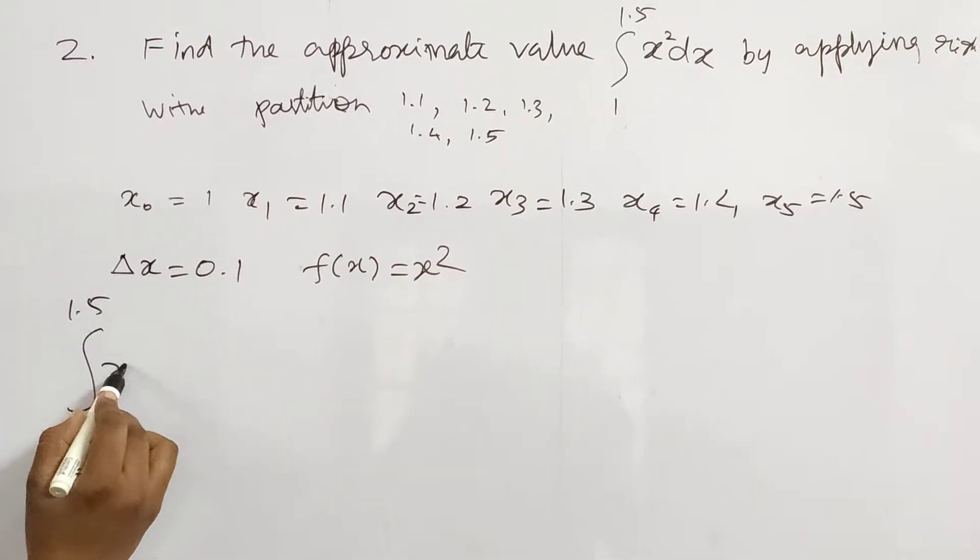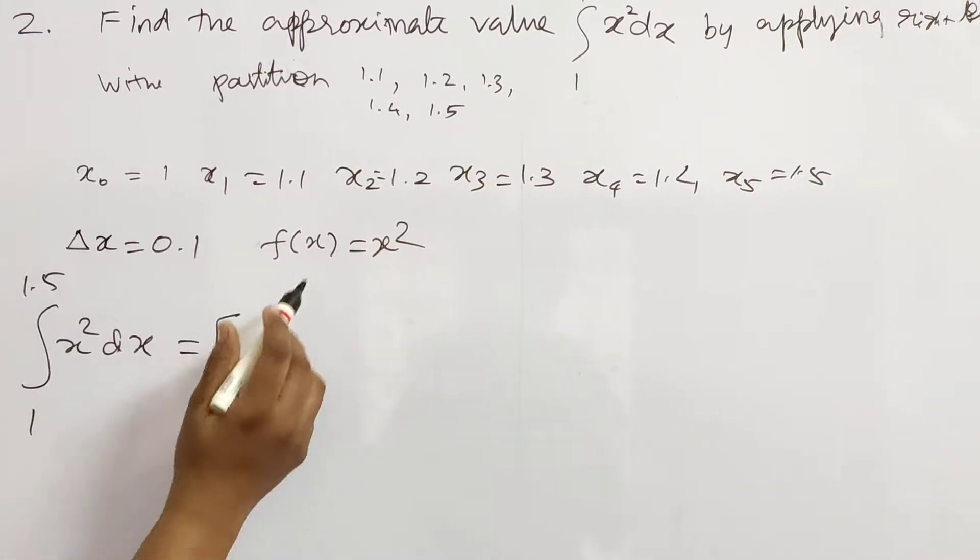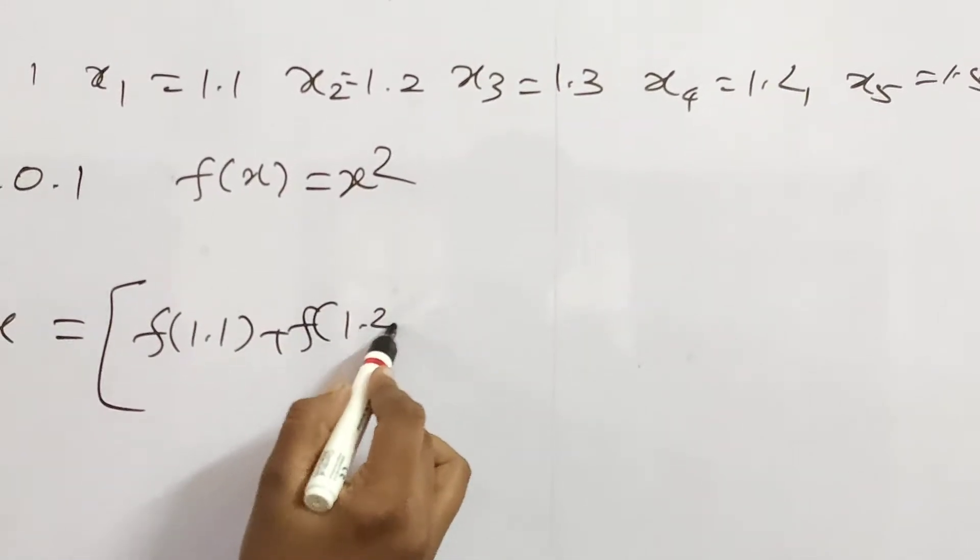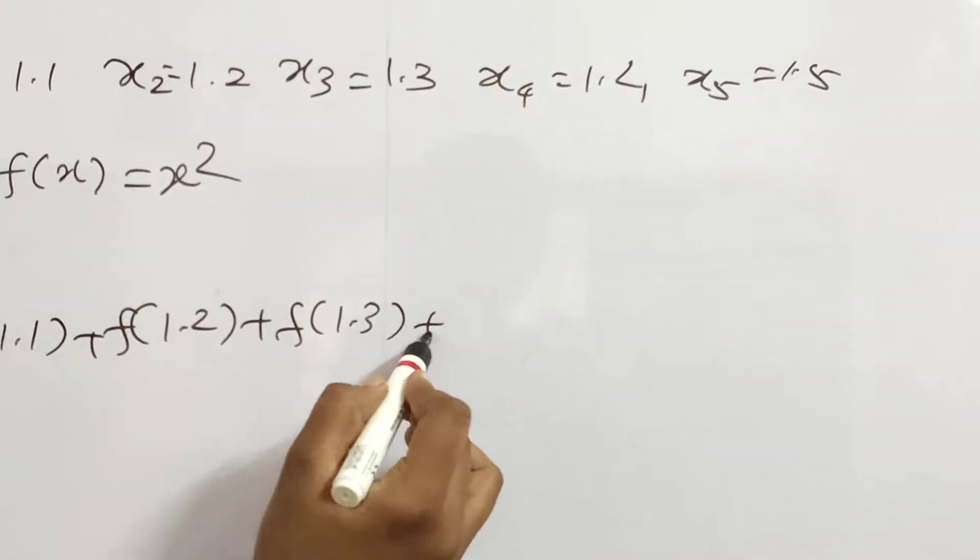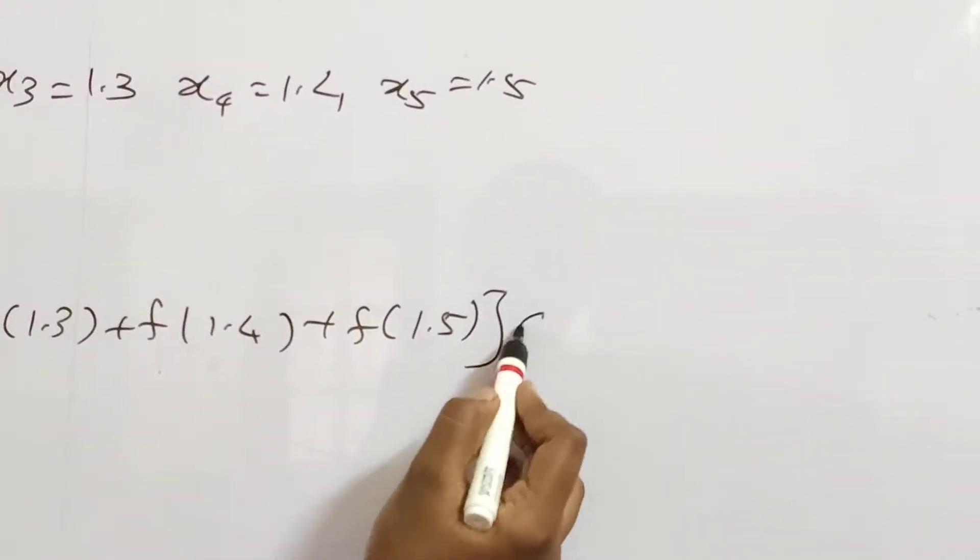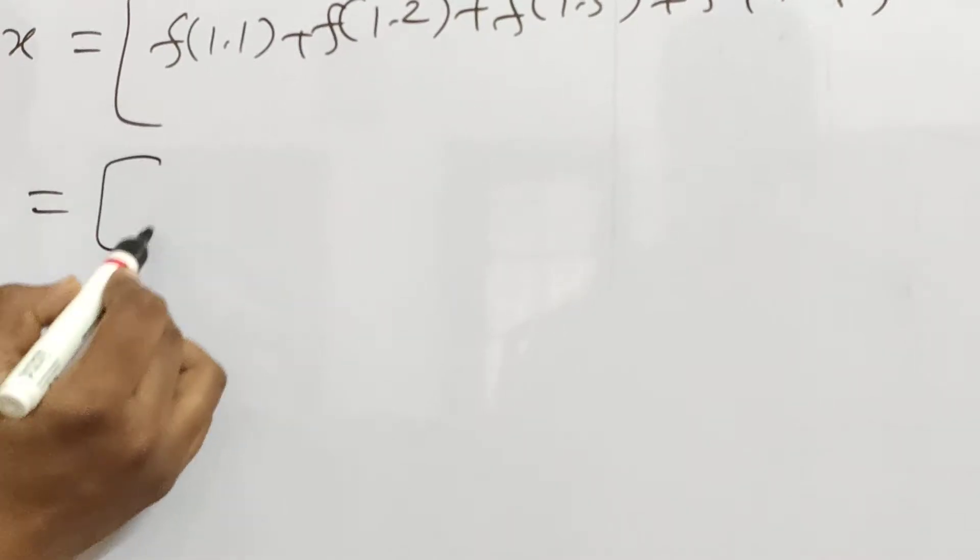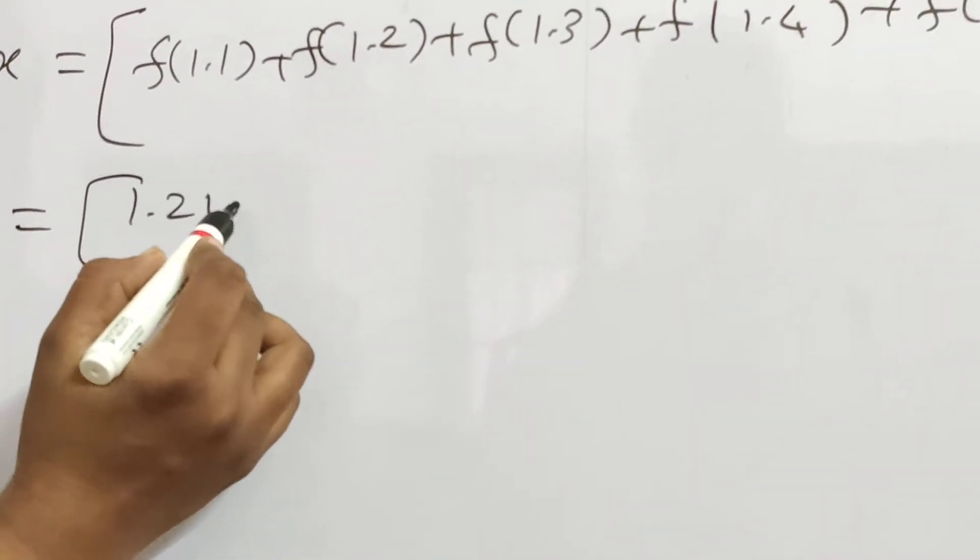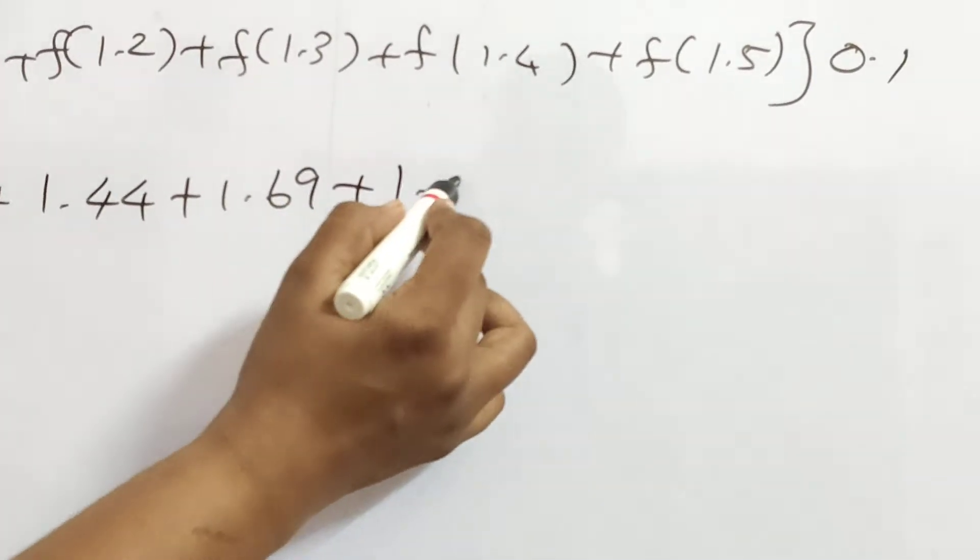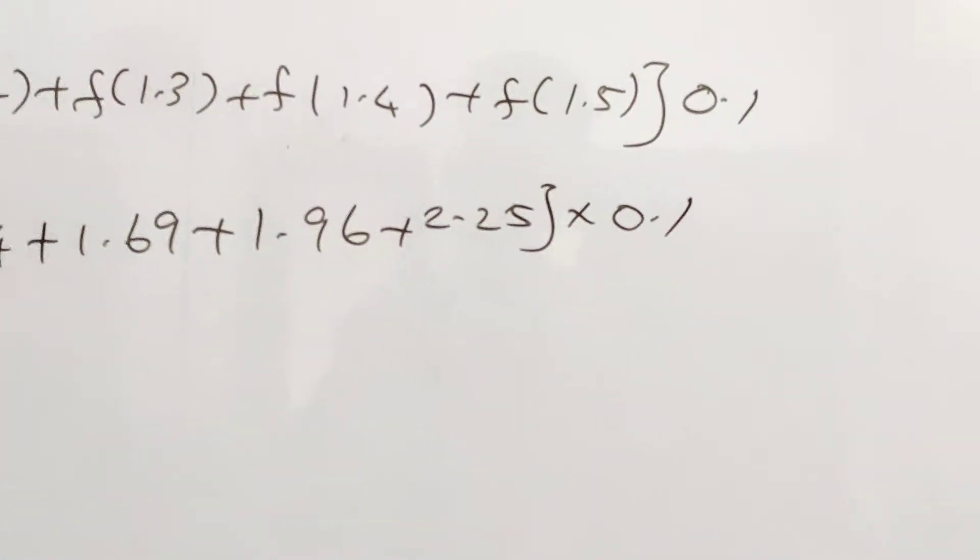So f of 1.1 plus f of 1.2 plus f of 1.3 plus f of 1.4 plus f of 1.5 into delta x 0.1, which equals f of 1.21 plus f of 1.44 plus f of 1.69 plus f of 1.96 plus f of 2.25 into 0.1.